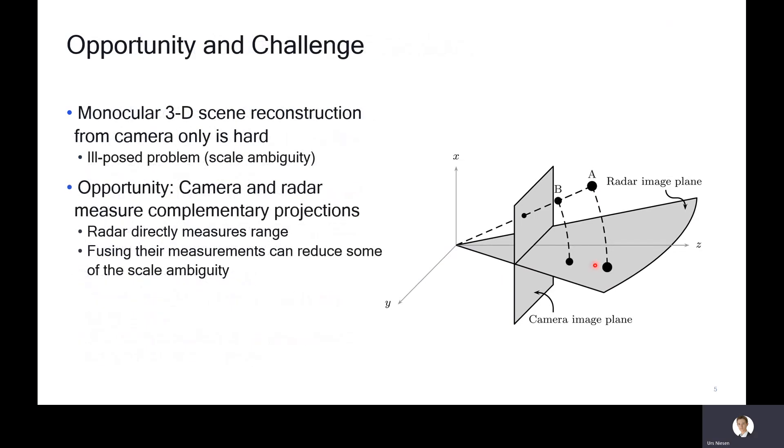As is well known, monocular 3D scene reconstruction from a camera only is hard. The problem is that this is an ill-posed question because of the scale ambiguity. For example, if you have this target A and B, these two objects are mapped into the same image on the camera image plane and they're therefore indistinguishable.